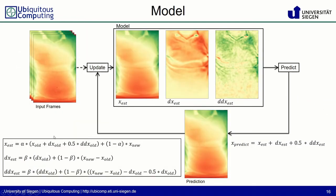Let's start with the model. We have three filtering equations applied to each single depth pixel independently, yielding the calm state, the first time derivative, and the second time derivative. From these three states we can predict the next frame and forward it into the update routine. This model, however, requires a stable window position on the torso surface because we always need to see the same pixel over time.